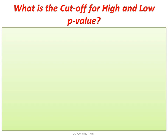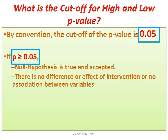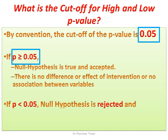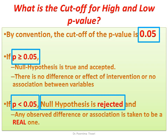When do we say the P-value is high and when do we say it is low? By convention, the cutoff for P-value is 0.05. If the P-value is 0.05 or more, the null hypothesis is accepted — there is no difference between the groups, no effect of the intervention, and no association between the variables. But if the P-value is less than 0.05, then the null hypothesis is rejected and any observed difference or association is taken to be real.